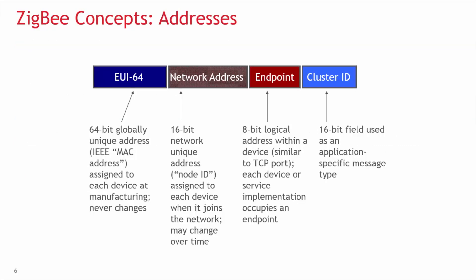Besides network-wide criteria, one node is distinguished from another by its individual node address. A node has a short address and a long address. The long address is the IEEE-assigned MAC address, or EUI-64 — a 64-bit address that is globally unique, meaning no two IEEE-based radios in the world should ever have the same EUI-64. This is generally assigned at manufacturing time. In the case of Silicon Labs EM-series chips, they are assigned when the chips come out of the manufacturing facility and will never change.